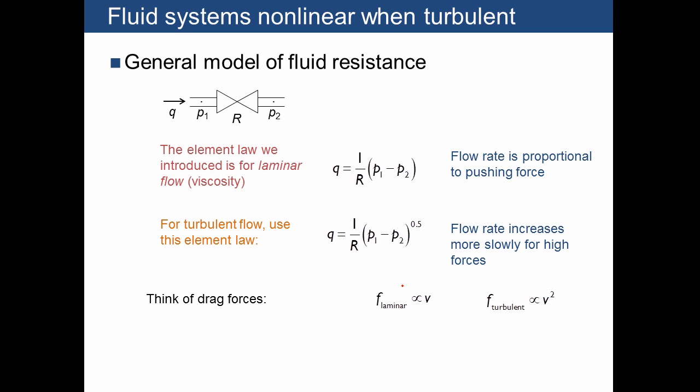Another way you can think of this is that for laminar flow, the drag force is proportional to velocity, and for turbulent flow, the drag force is proportional to the square of velocity. And of course, the pressure difference is the same idea as force, and the flow rate is just a kind of velocity. So if we just flip these around, then we get flow rate is proportional to the pushing force, and here flow rate is proportional to the square root of the pushing force. These are the analogs for these two equations in terms of thinking in terms of drag rather than in terms of pipes.